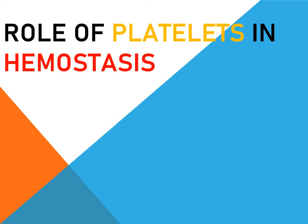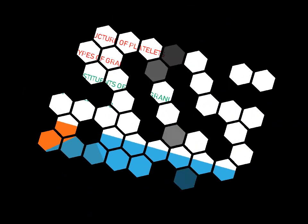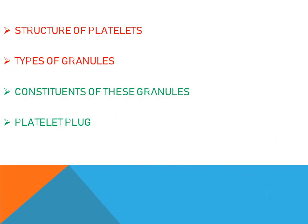Platelets have a very vital role in hemostasis because they form the platelet plug, which seals the defect in the endothelium by providing a surface where platelets bind together, resulting in the activation of various coagulation factors. To understand this, we need to look at the structure of the platelets, the types of granules, the constituents of these granules, and ultimately the platelet plug formation.